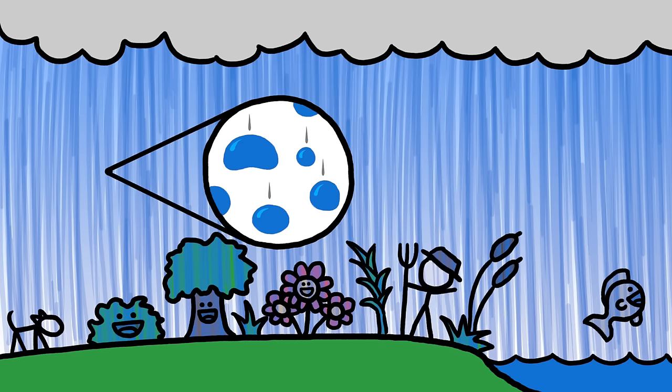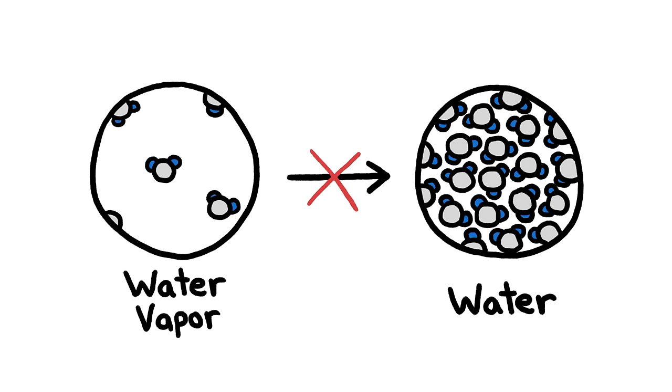In fact, without these microscopic pieces of dirt, there would be no rain, because water vapor can't condense into droplets on its own.